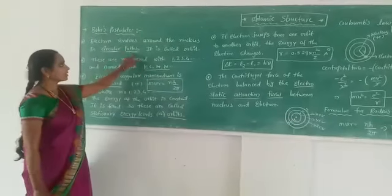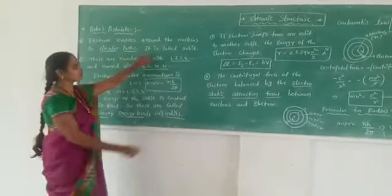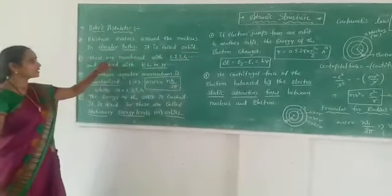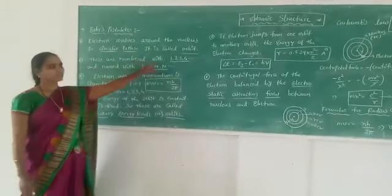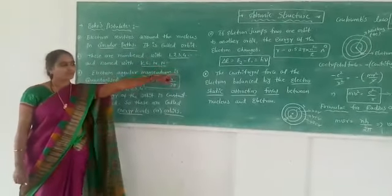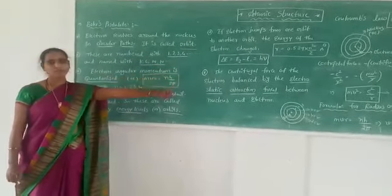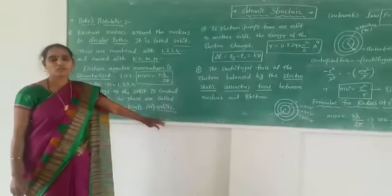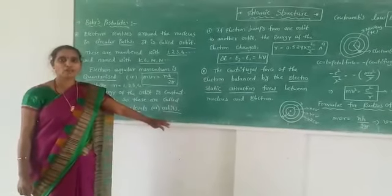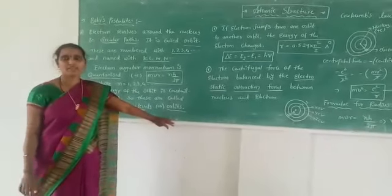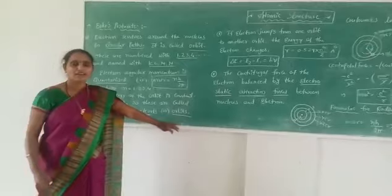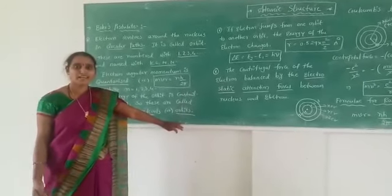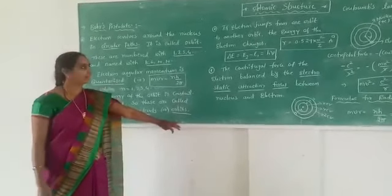These circular paths are called orbits. They are numbered with 1, 2, 3, 4 — the orbits are represented with the numbers 1, 2, 3, 4, and so on. These are positive integers. They are also named with the alphabets K, L, M, and N.